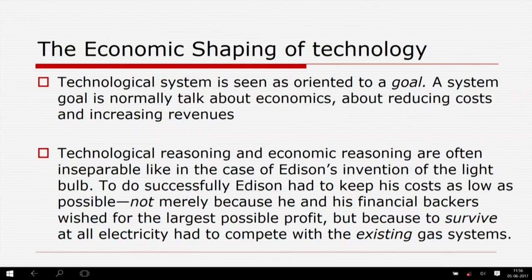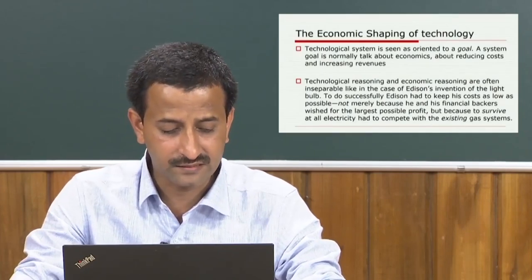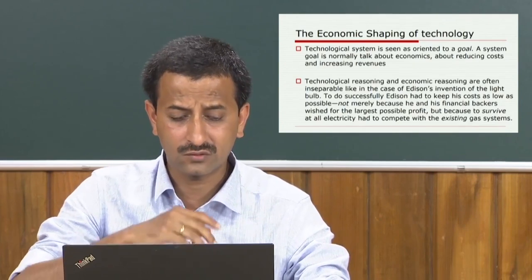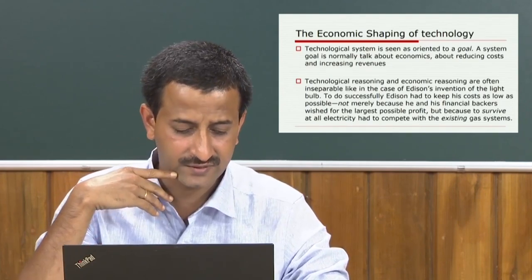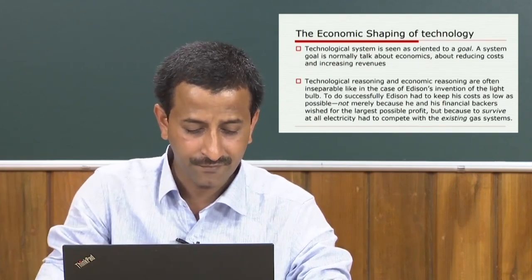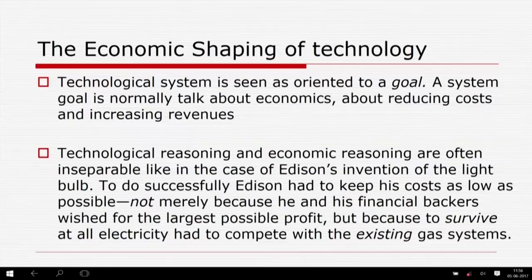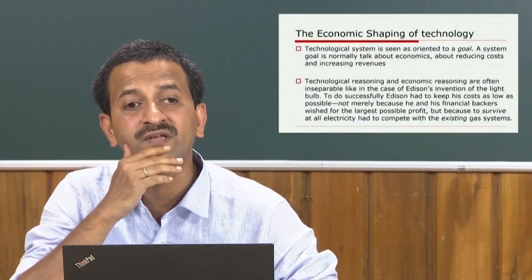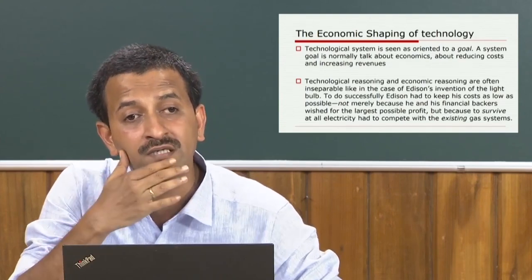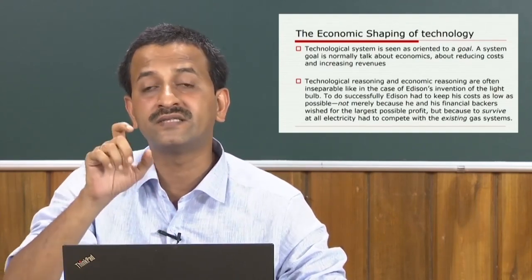Our extract from Hughes' work demonstrates this in the case of Edison's invention of the light bulb. Edison was quite consciously the designer of a system. He intended to generate electricity, transmit it to consumers, and sell them the apparatus they needed to make use of it. To do so successfully, Edison had to keep his costs as low as possible — not merely because he and his financial backers wished for the largest possible profit, but because to survive at all, electricity had to compete with the existing gas systems.